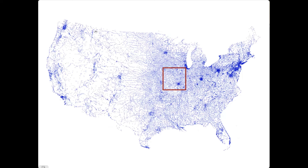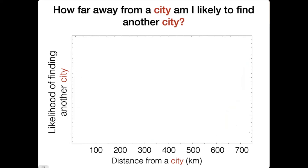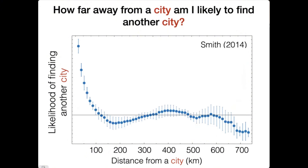You can actually see a lot of the same trends if you look at how cities are distributed. Here's a digitized map of nightlights from a satellite photograph of North America. And you can ask: how likely am I to find another city as a function of distance from the city that I'm currently in? And if you plot this, you get something that's very, very similar.